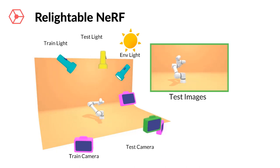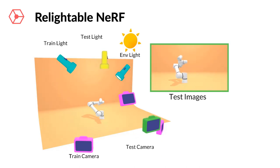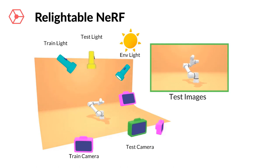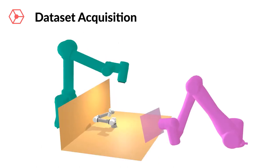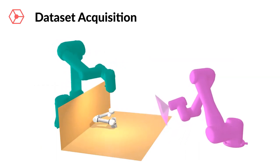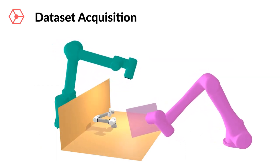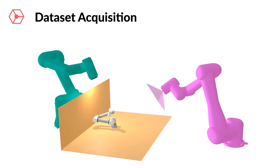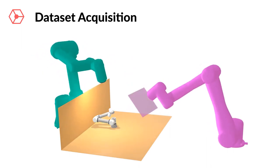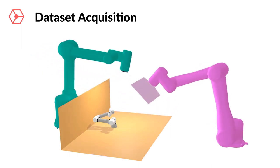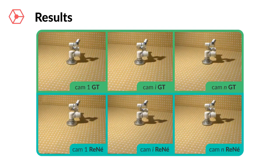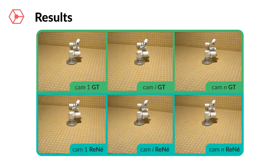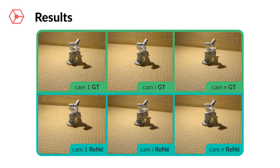We embarked on a quest to explore if there is a simple way to train a NeRF architecture that not only performs novel view synthesis, but also supports relighting of a scene. We then collected a specific dataset called René Relighting NeRF, obtained through the coordinated movements of two robotic arms, one holding a point light and the other a camera. Moving forward, we will analyze and discuss the results obtained with the proposed baseline.